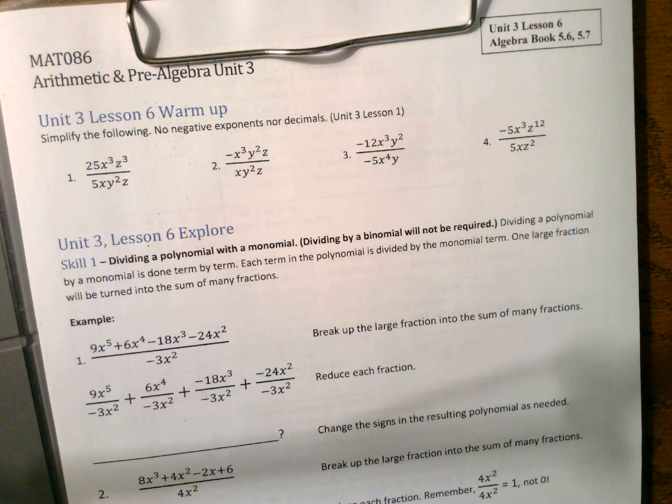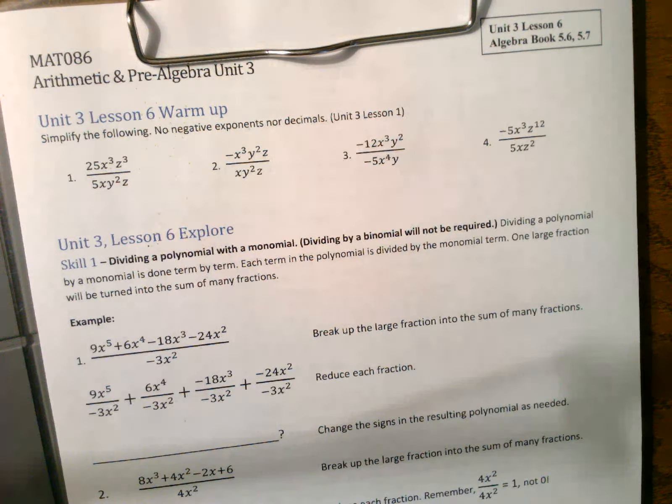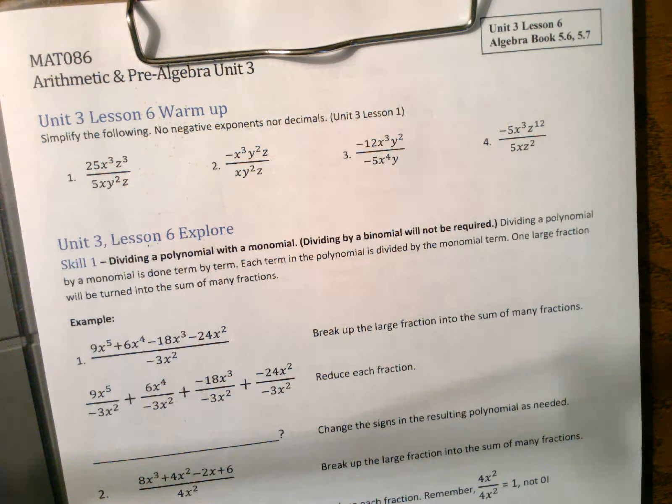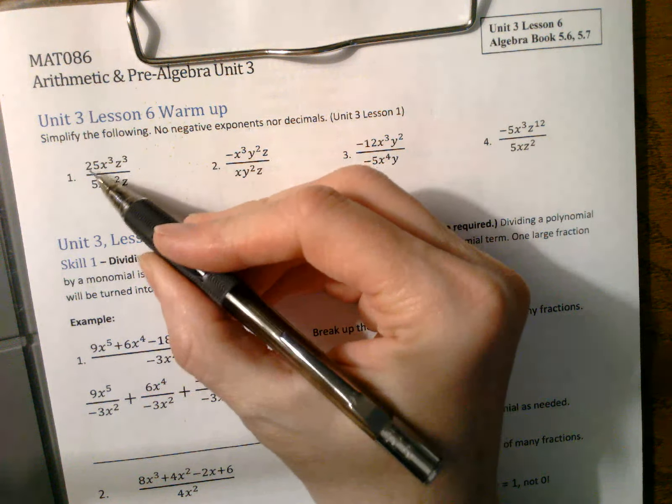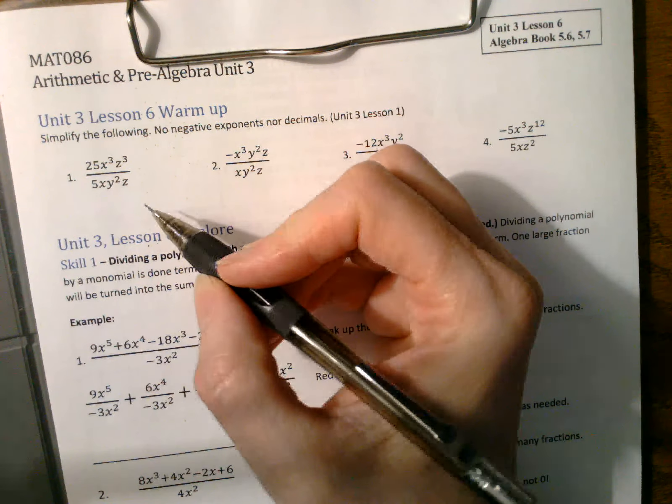All right, here's the last lesson of Unit 3, Lesson 6, nice and short. We just want to learn how to divide a polynomial. So all we need to warm up with is the same information that we learned in the first lesson, how to simplify a fraction that has variables in it.